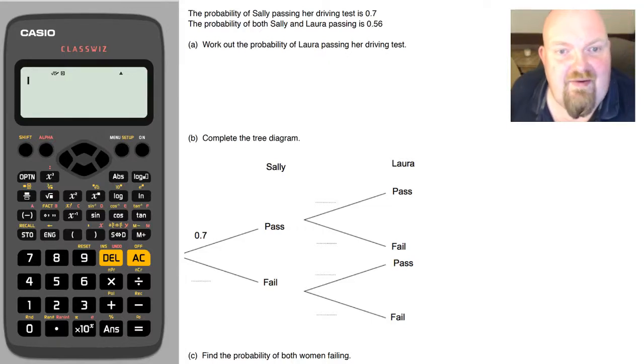Right then, for this question we have probability trees. So the first thing that we need to do for part A, we're asked to find the probability of Laura passing her driving test.